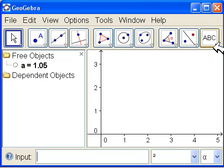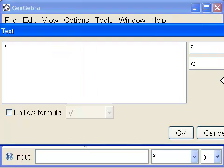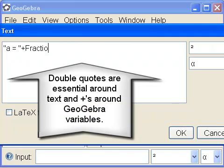Now we use the GeoGebra tool, insert text. Click in the drawing pad and start to type our text. Double quotes around anything that's text and plus around GeoGebra variables.